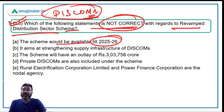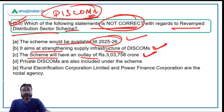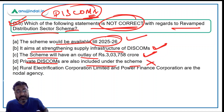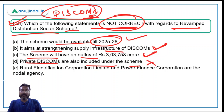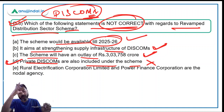Reviewing the statements: the scheme is available till FY 2026 — correct. It aims at strengthening supply infrastructure of DISCOMs — correct. The outlay of Rs. 3,03,758 crores — correct. Private DISCOMs are included under the scheme — this is incorrect, as only public sector distribution companies are included. Therefore Option D is the correct answer.